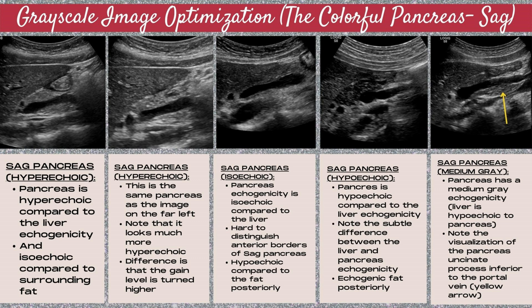Note, however, that this pancreas echogenicity is hypoechoic compared to the fat posterior to the portal vein. The next pancreas over is hypoechoic, meaning it's darker in echogenicity than the liver — and you'll note it's easier to delineate the pancreas borders when it's abutting the liver. There's also echogenic fat posterior to the portal vein. The sagittal pancreas on the far right is a medium gray shade, and the liver is actually slightly hypoechoic to the pancreas echogenicity. Note the visualization of the pancreas uncinate process inferior to the portal vein, shown with the yellow arrow.